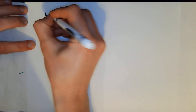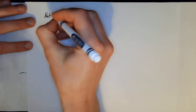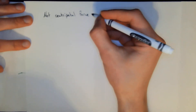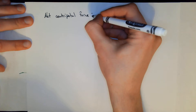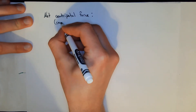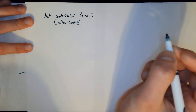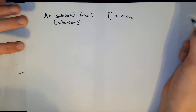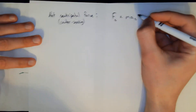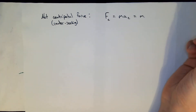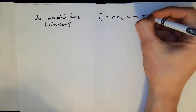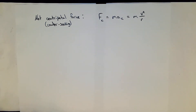Any time there's an acceleration we can say there is a force. The net centripetal force F_c, which means center-seeking and points toward the center, is equal to M times a_c. We had a definition for a_c in terms of tangential velocity and the radius of the circle: a_c = v² / r. That comes from the definitions in section 7.3, giving us two interpretations for the overall centripetal force.